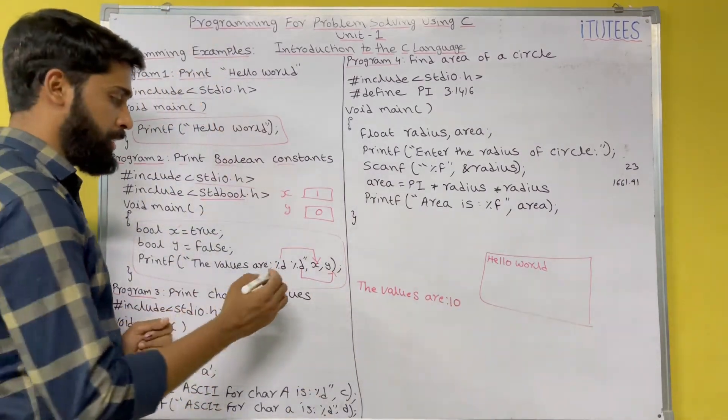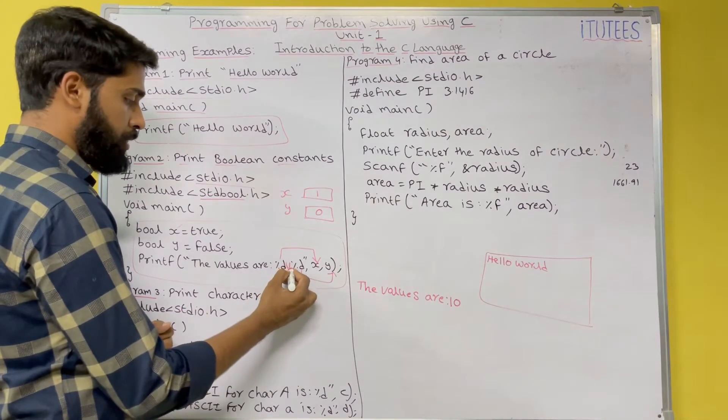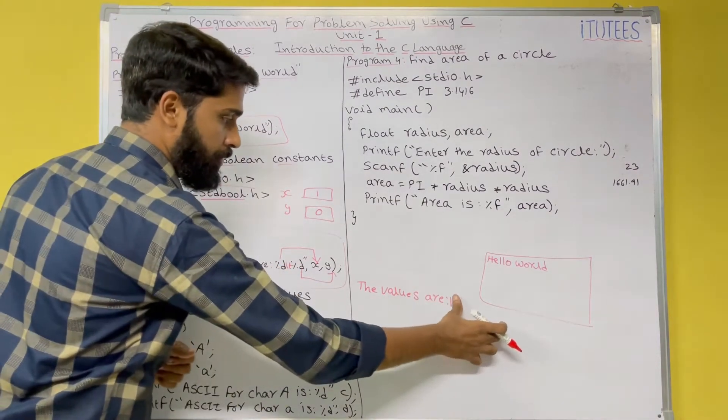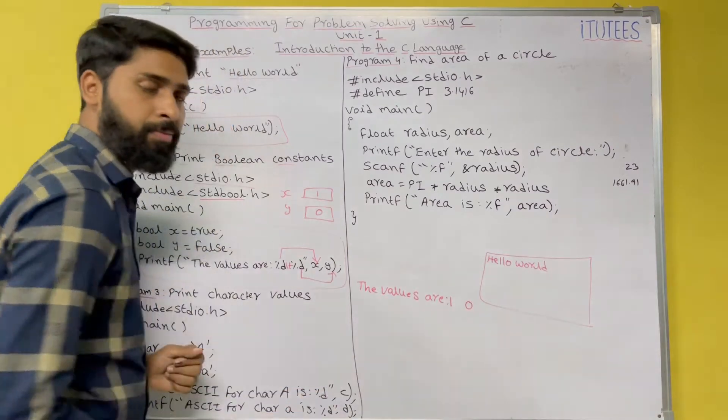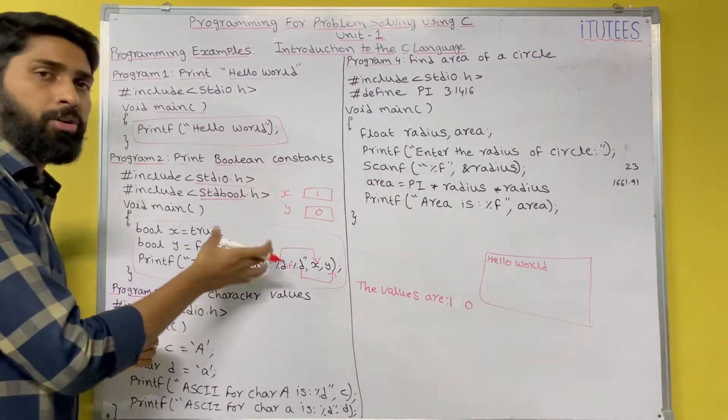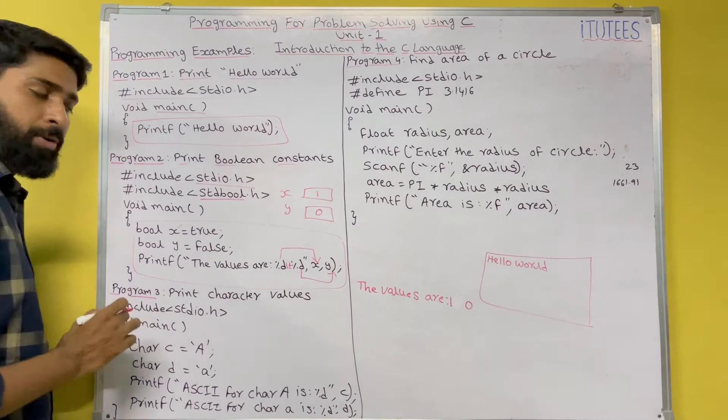If I want the space, then I use slash t. Then, after tab space, it prints 0. In this way, you are going to format the output.